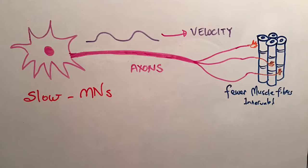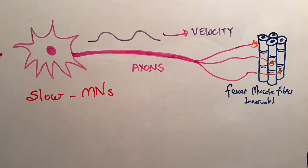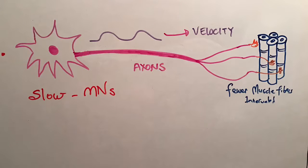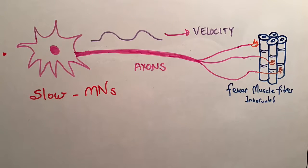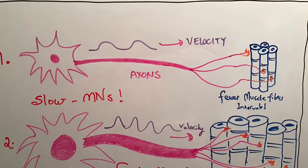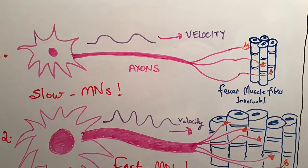Experiments have shown that a slow motor neuron with a slow conducting axon will innervate fewer and thinner muscle fibers compared to their fast conducting counterparts which can innervate much greater numbers and thicker muscle fibers.